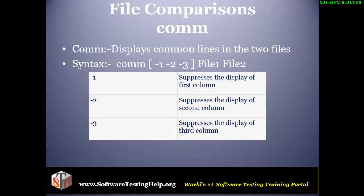What the comm command does is it displays the common lines for two files. The syntax is: comm, then you can use switches, then the name of file one and the name of the second file. It will display the common lines for file one and file two.